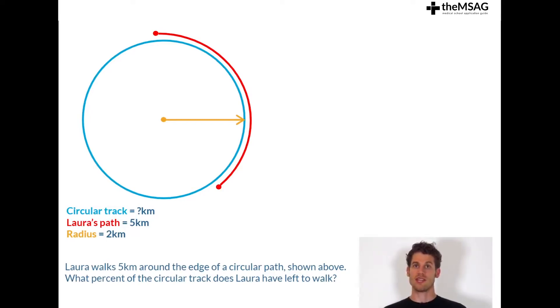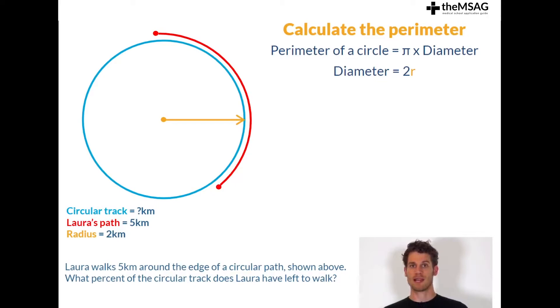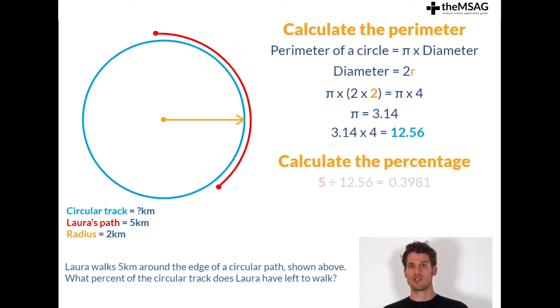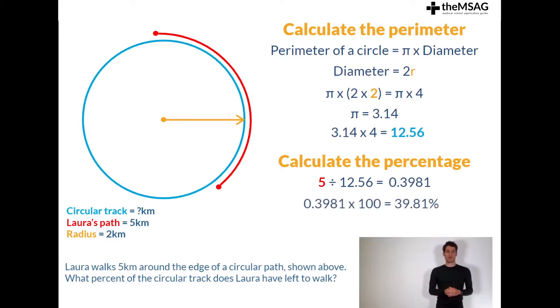All you would need to do is calculate the perimeter or circumference of a circle using the memorized formula. If the perimeter of a circle equals pi times diameter and a diameter is twice the length of the radius, then the perimeter of this circular path is pi times 2 times 2 or pi times 4. Pi can be rounded to 3.14. Pi times 4 equals 12.56. If Laura has traveled five kilometers along this path, then she has traveled 5 over 12.56, which equals 0.3981, which in turn is 39.81% of the way.